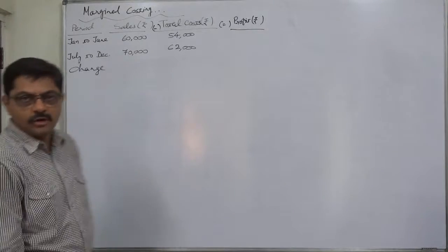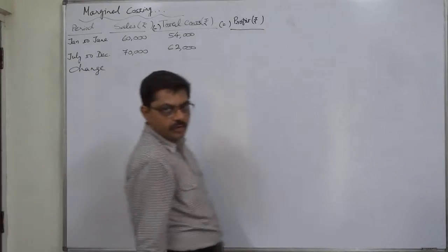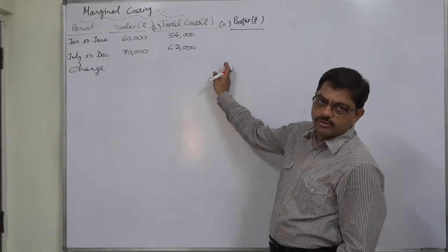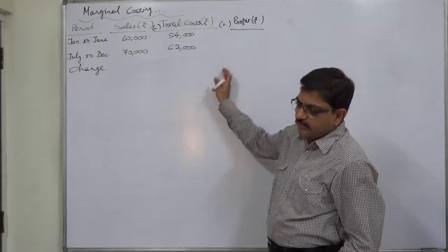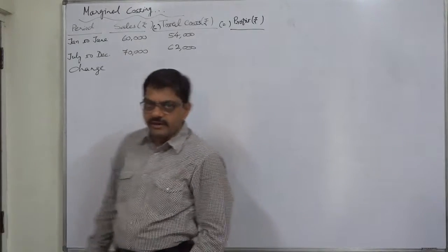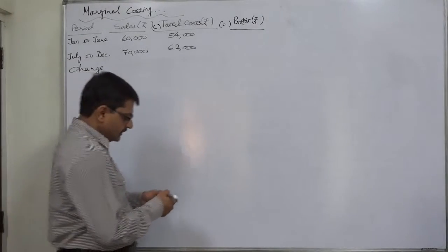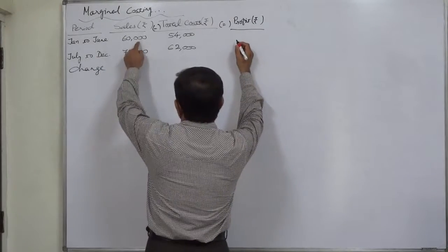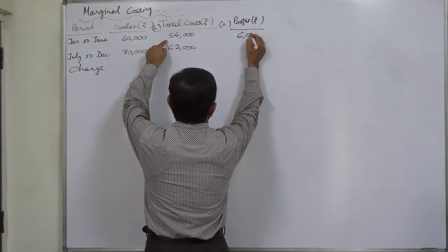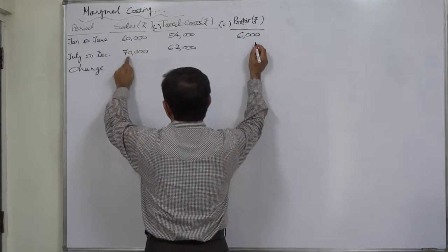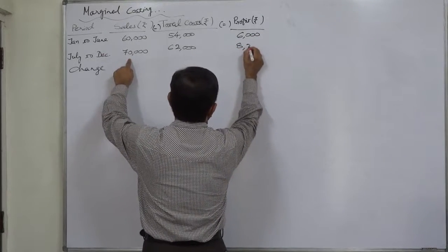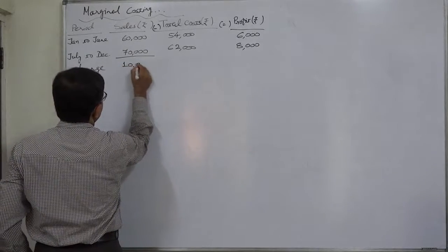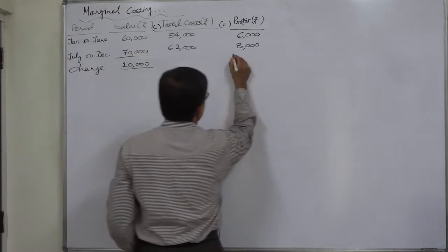If we subtract the percentage of variable cost to sales from 100, the result will be the PV ratio. I personally prefer not to change the formula but to find the profit, so I suggest using the formula change in profit upon change in sales every time. Let us first calculate profit: sales minus total cost — first half is 6,000 and second half is 8,000.